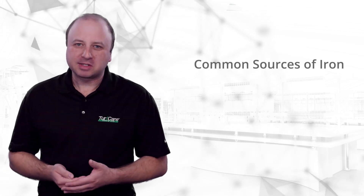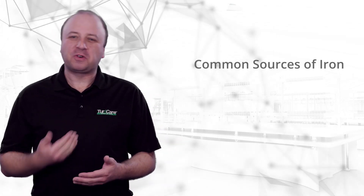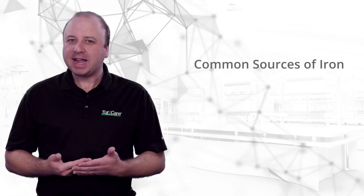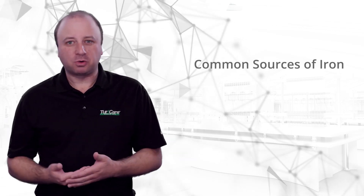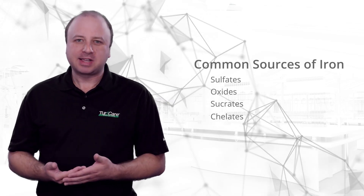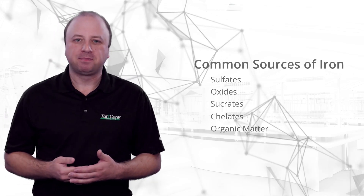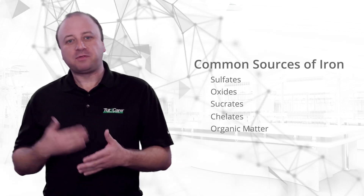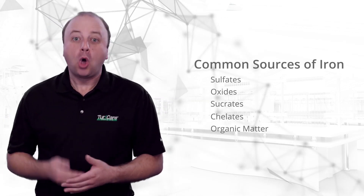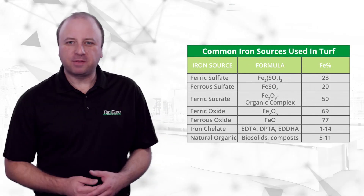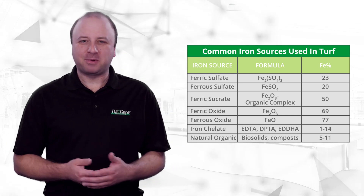There are many iron sources. Iron isn't packaged in a fertilizer blend in its elemental form — it comes in the forms of sulfates, oxides, sucrates, chelates, and coupled with organic matter. Each form of iron has certain advantages and disadvantages, and once you understand the properties of each, it becomes apparent why certain sources are preferred in certain situations. Let's take a brief look at a chart citing some common examples of iron used in turf fertilizers.